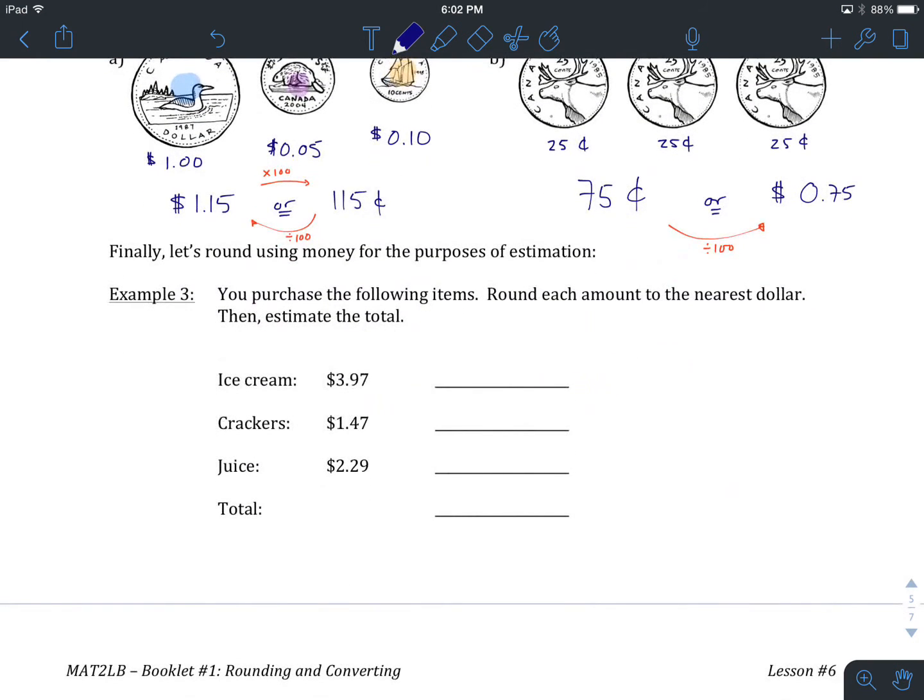Lastly, we're going to look at estimation as an extension of our ability to round. Sometimes when you're out purchasing things, it's nice to keep a running tally in your mind of the things you've gathered together, so you have a rough idea about how much things will cost. We're going to do this by rounding each amount to the nearest dollar, then estimating the total by adding those up.